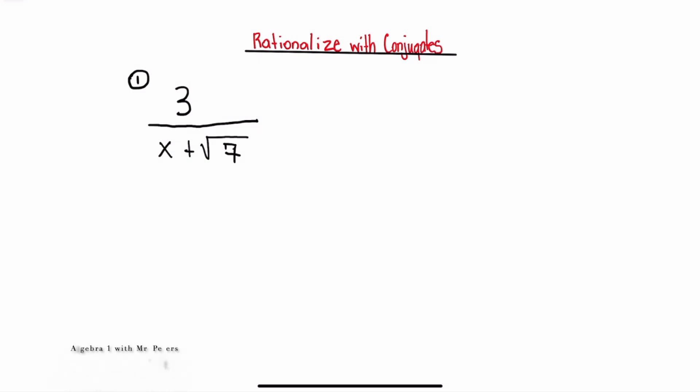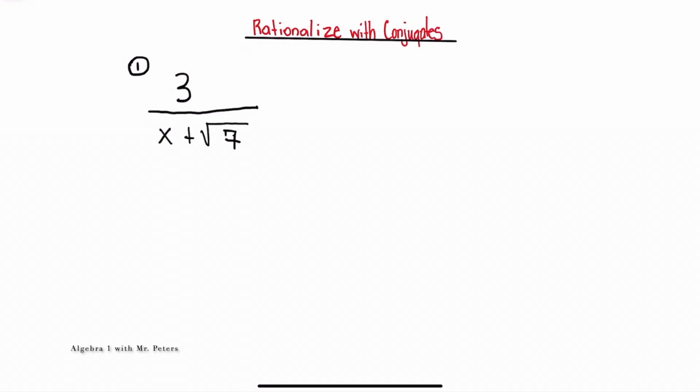What's good math family! Today we're going to look at three examples of how to simplify fractions that have radicals in their denominator. Make sure you stick around to the last example because we're going to look at a radical that has a root greater than two. Let's get started.